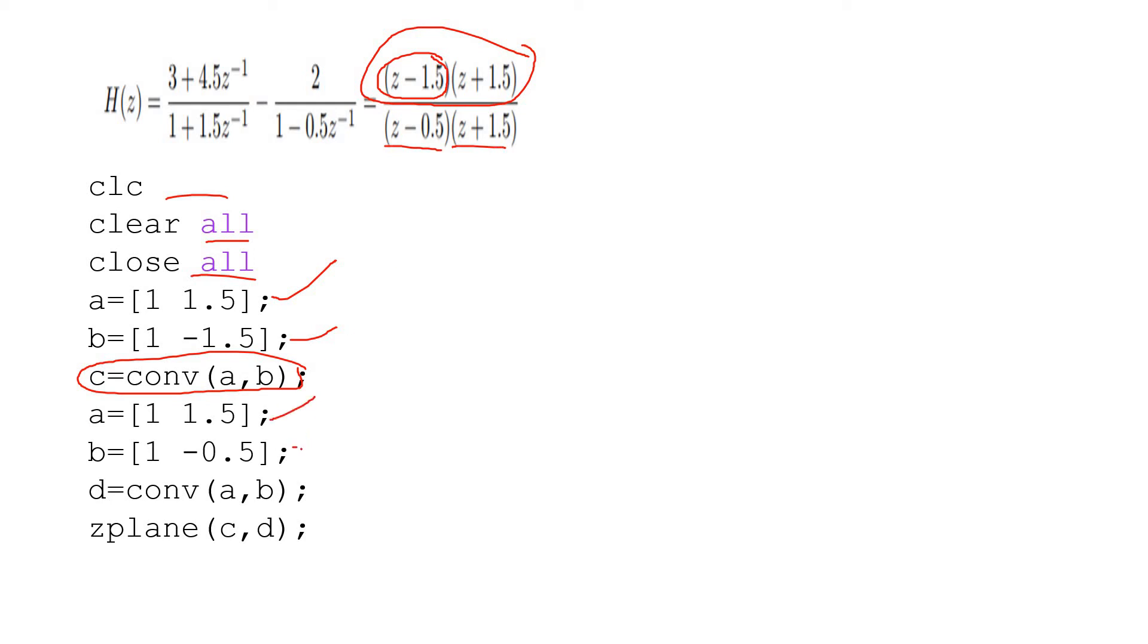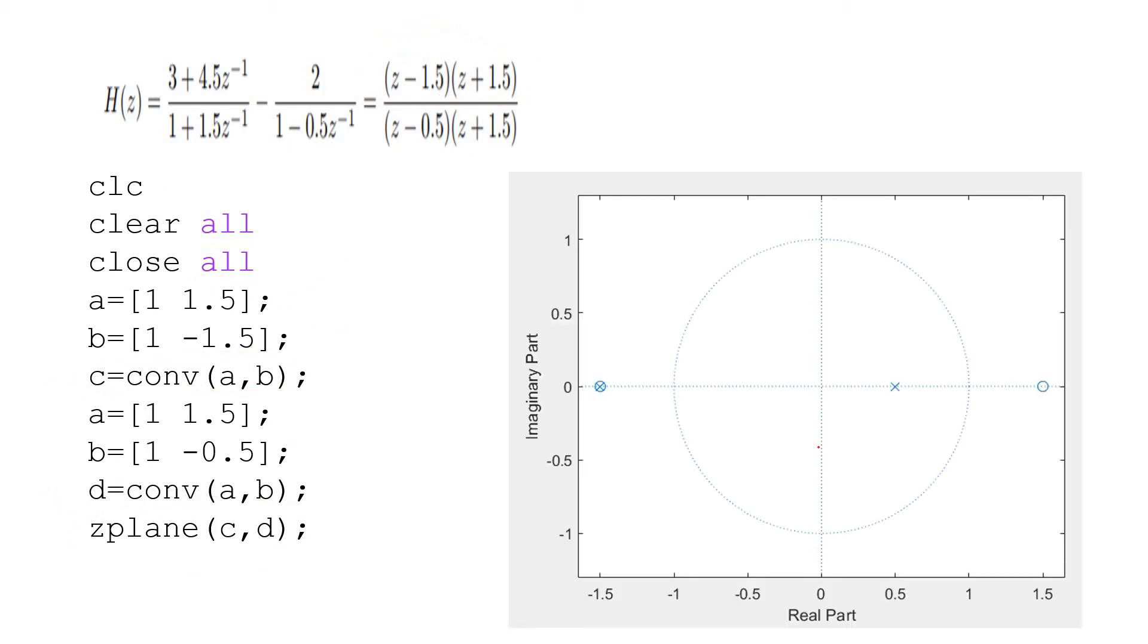So two polynomials I have defined here, and I have multiplied those two using conv. So in c the numerator coefficients are stored, in d the denominator coefficients are stored. Now if I perform zplane(c, d), I will get the pole-zero plot like this. Here you can see clearly, as I have discussed in theory, same goes for practical implementation of Z-plane also. Same position of pole and zero here at -1.5. This particular pole and zero are canceling each other, and here one pole is there which is inside the unit circle, and here one zero is there. So as a result, in the whole system, although there is one pole outside the unit circle, zero is canceling that. So as a result, the whole system becomes a stable system.